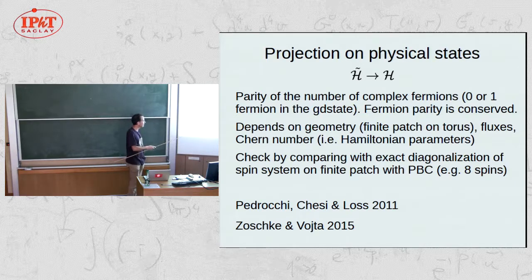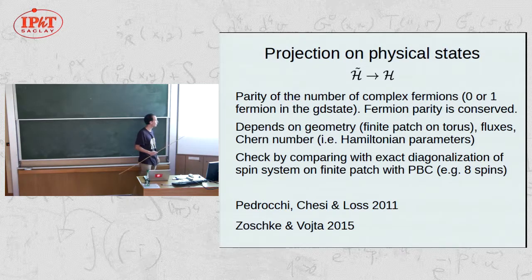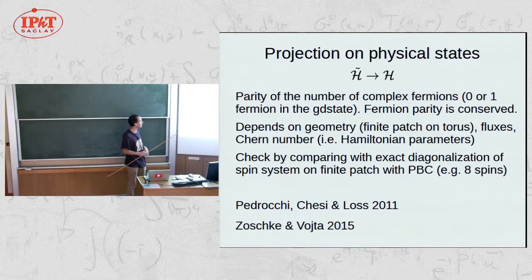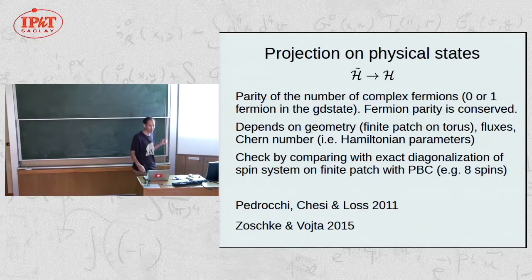People who understood this clearly verified it by comparing the Majorana solution to exact diagonalization directly on the spin system. With Julien, we made some progress on this: what really matters in terms of parameters is the parity of the Chern number of the corresponding band structure for the fermions, and that's what determines the correct parity.